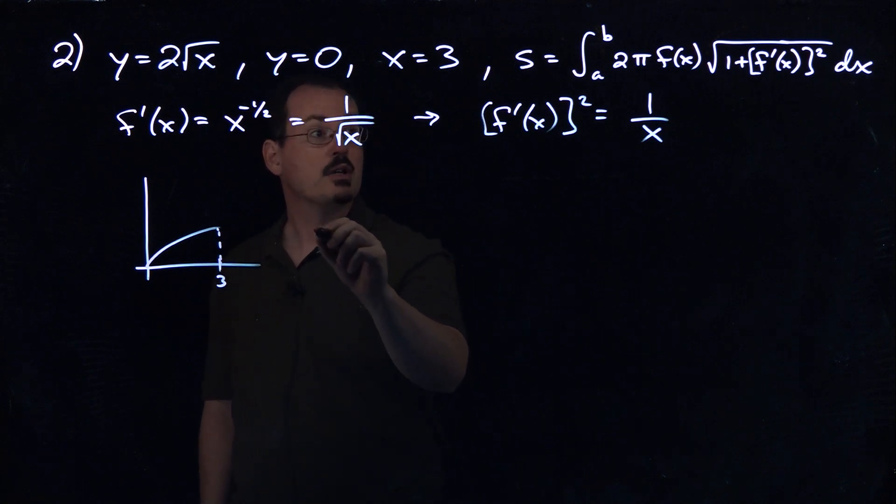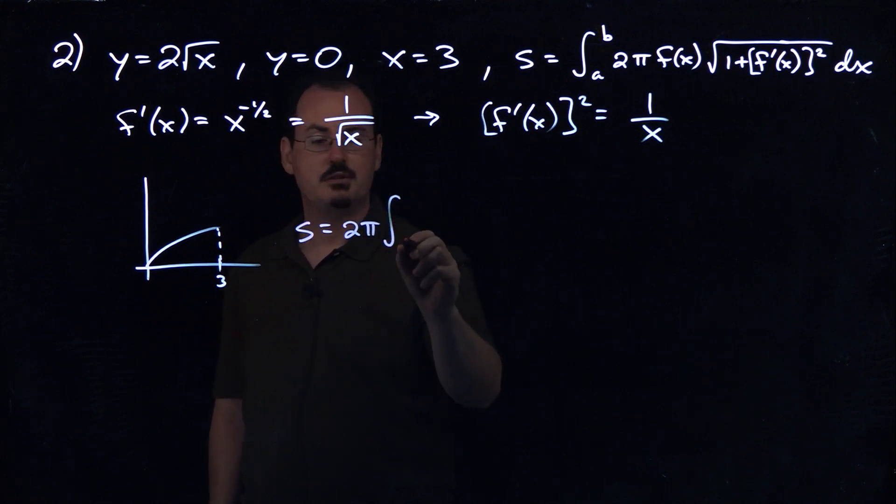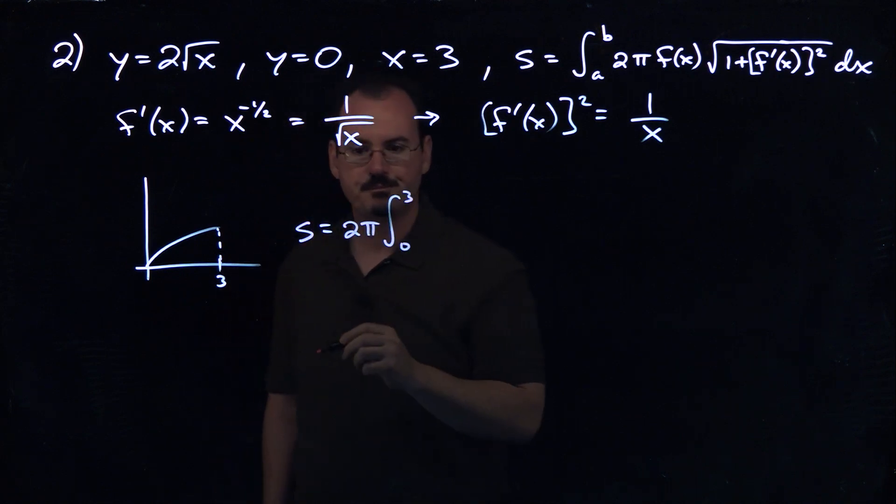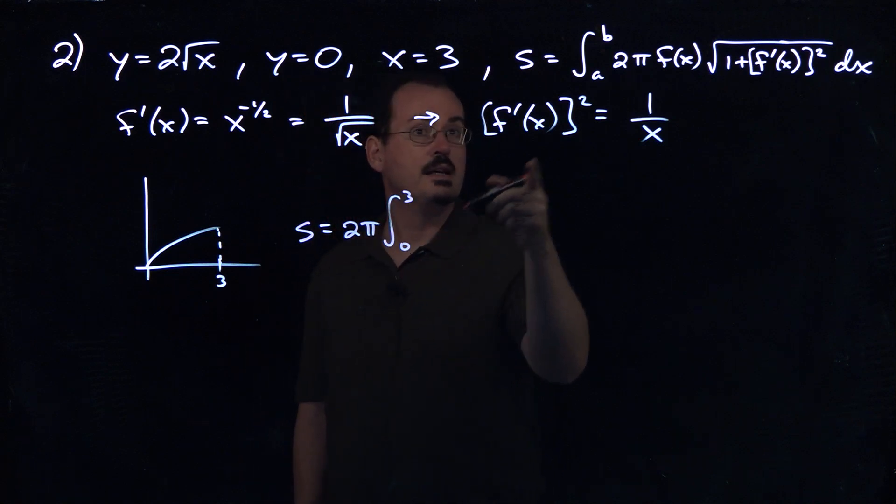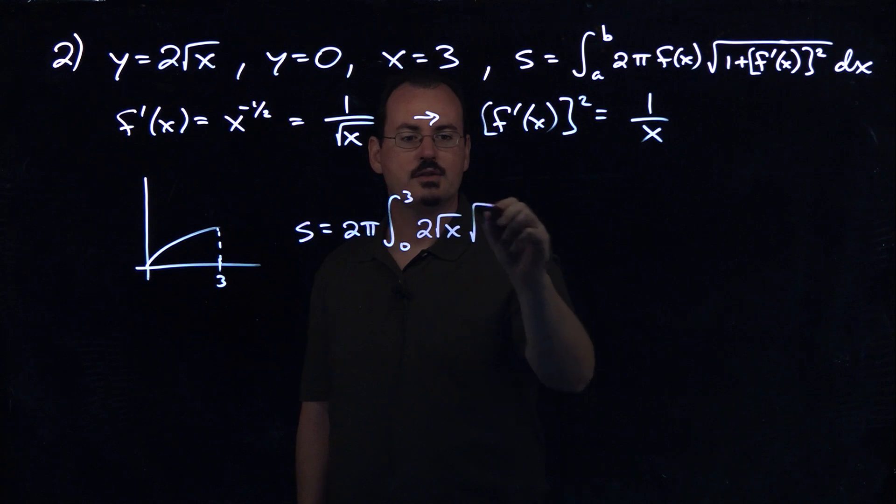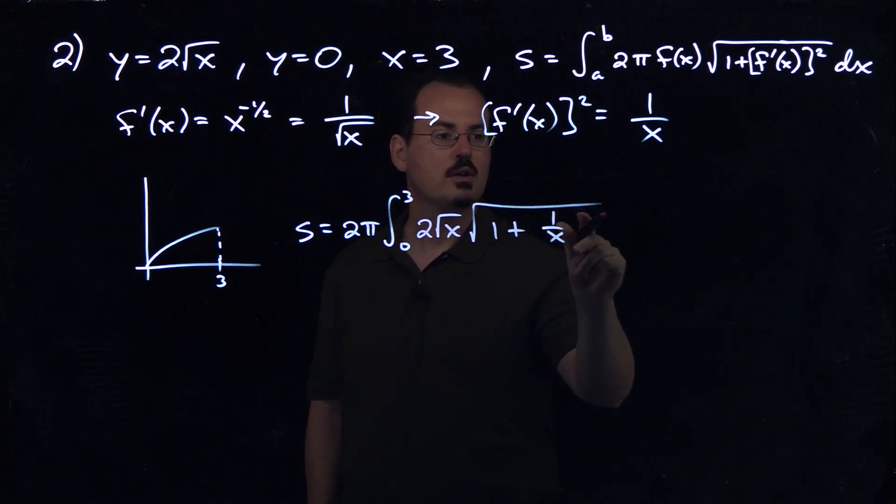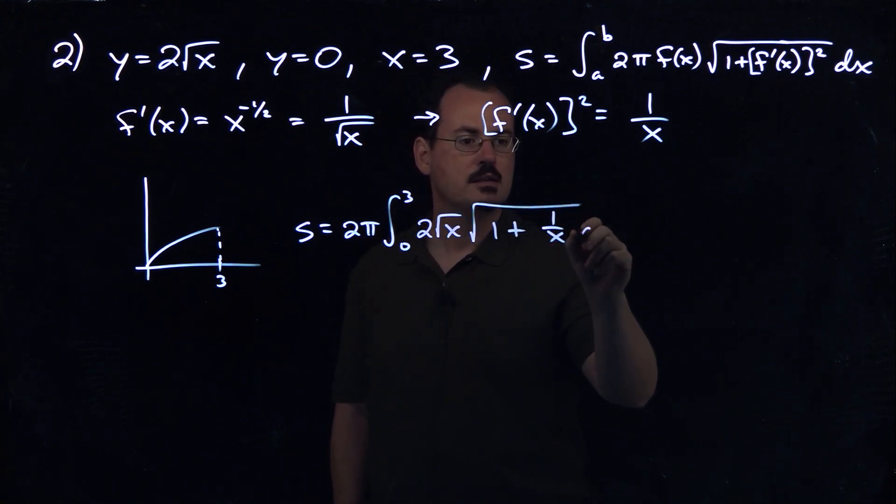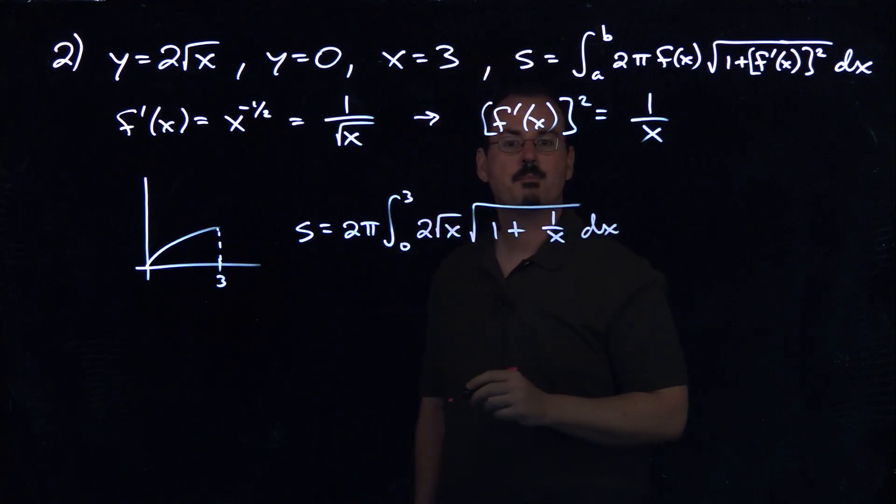So the integral that we're going to get out of this is s is equal to 2 pi, the integral from 0 to 3. And we'll put the function itself there, 2 square root of x, and then we have the square root of 1 plus 1 over x dx.